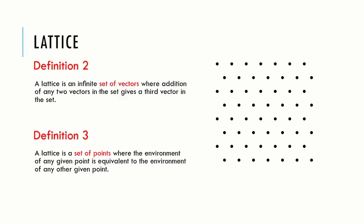Another equivalent definition of lattice: a lattice is an infinite set of vectors where addition of any two vectors in the set gives a third vector in the same set. For example, if t1 and t2 are two vectors from a lattice, then if we add t1 and t2, we will get a third vector t which also belongs to the same lattice.